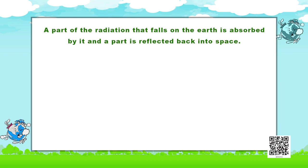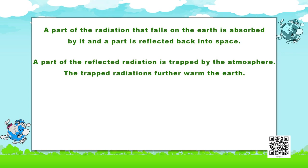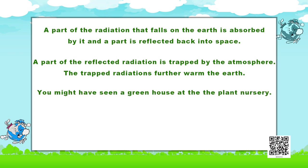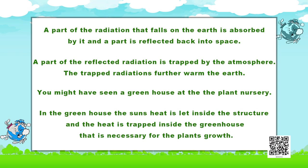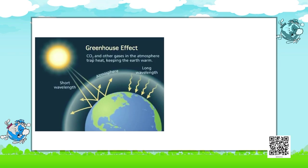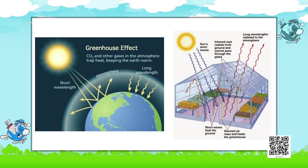Now let us try to understand the greenhouse effect. You know that the sun's rays warm the earth's surface. A part of radiation that falls on earth is absorbed by it and a part is reflected back into space. The part of reflected radiation is trapped by the atmosphere. The trapped radiation further warms the earth. You might have seen a greenhouse at a plant nursery — in a greenhouse, the sun's heat is let inside the structure and the heat is trapped inside, which is necessary for the plants' growth. The trapping of radiation by earth's atmosphere is similar to a greenhouse, which is why it is called the greenhouse effect.